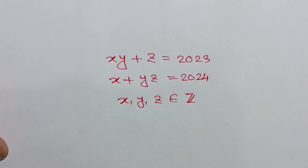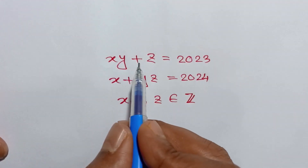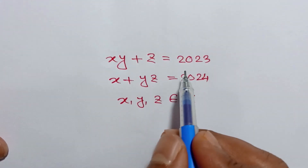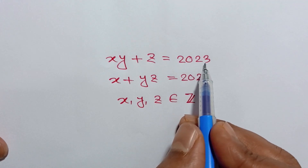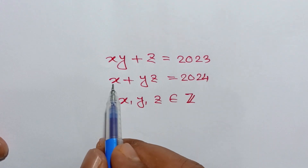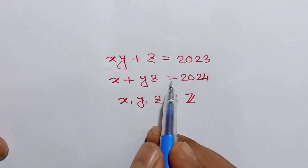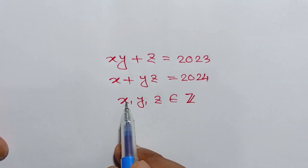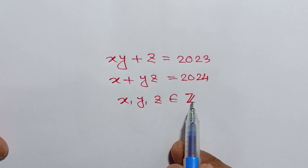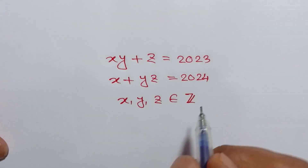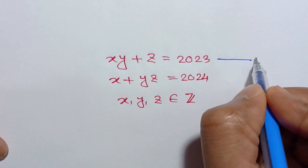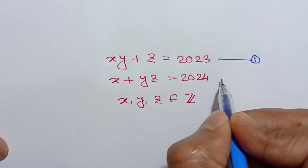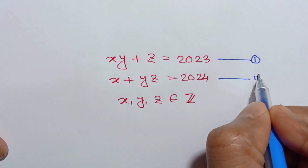Hi everyone. In this video I am going to show how to solve xy plus z is equal to 2023, and x plus yz is equal to 2024, where x, y, and z are integers. Let's call it equation number 1 and equation number 2.